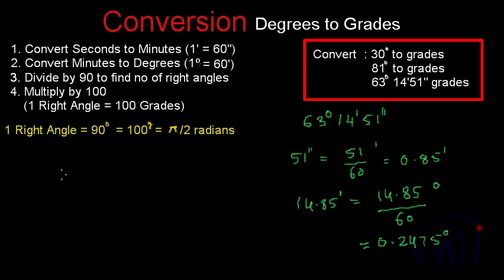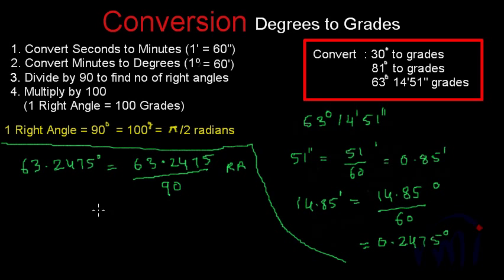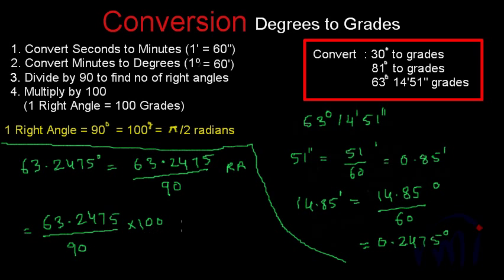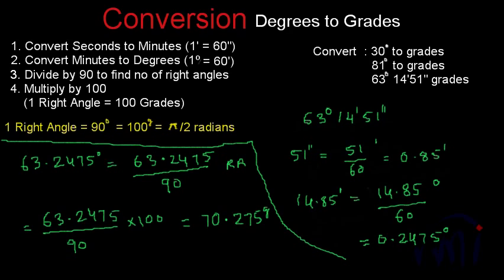So the total degrees are 63 plus 0.2475, which equals 63.2475 degrees. This is the angle originally written as 63 degrees, 14 minutes, 51 seconds. Now, 63.2475 divided by 90 gives the number of right angles, and multiplying by 100 gives the number of grades: 63.2475/90 × 100 = 70.275 grades.